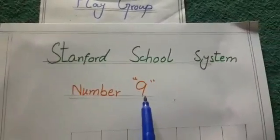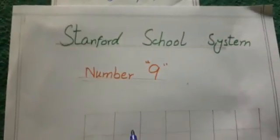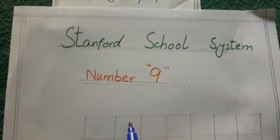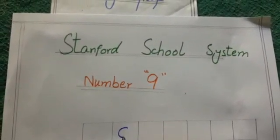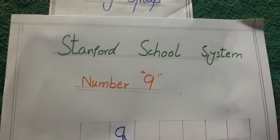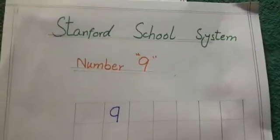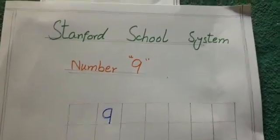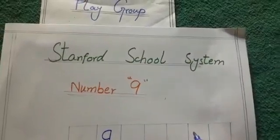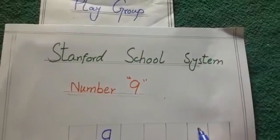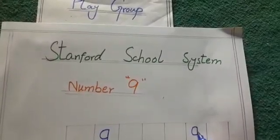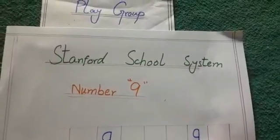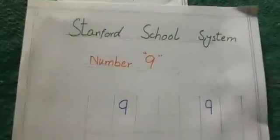Number nine. So I write here number nine — make a half circle and make a standing line. This is number nine. I write here again — make a half circle and make a standing line. This is number nine.